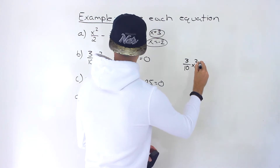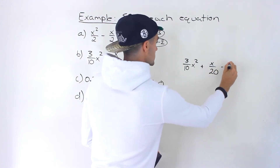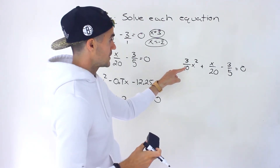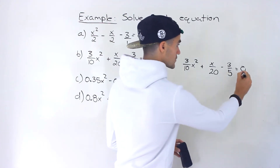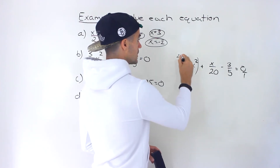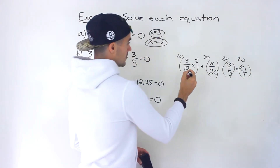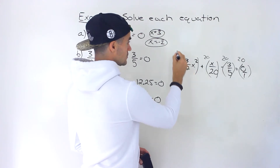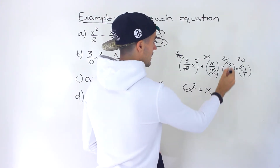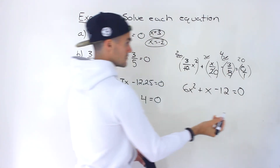Moving to the next one: we have three over ten x squared plus x over twenty minus three over five equals zero. The lowest common denominator between ten, twenty, five, and one is twenty. So we multiply everything by twenty. Ten goes into twenty twice, so two times three gives us six x squared. The twenties cancel here so we're left with x. Five goes into twenty four times, so negative four times three gives us negative twelve. Twenty times zero is zero. So we get six x squared plus x minus twelve equals zero.